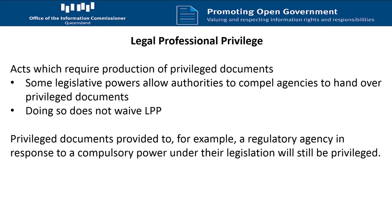Some regulatory agencies and investigatory bodies have the power to compel the production of documents from agencies, even where those documents are subject to legal professional privilege. Generally, there will be some statement in the Act that says doing so does not waive privilege. So if you have a file with privileged documents showing they've been provided to an agency in response to such a power, privilege will still be maintained on those documents unless it's been waived in some other way. You can still refuse access to them under Schedule 3, Section 7, on the grounds that they're subject to legal professional privilege.